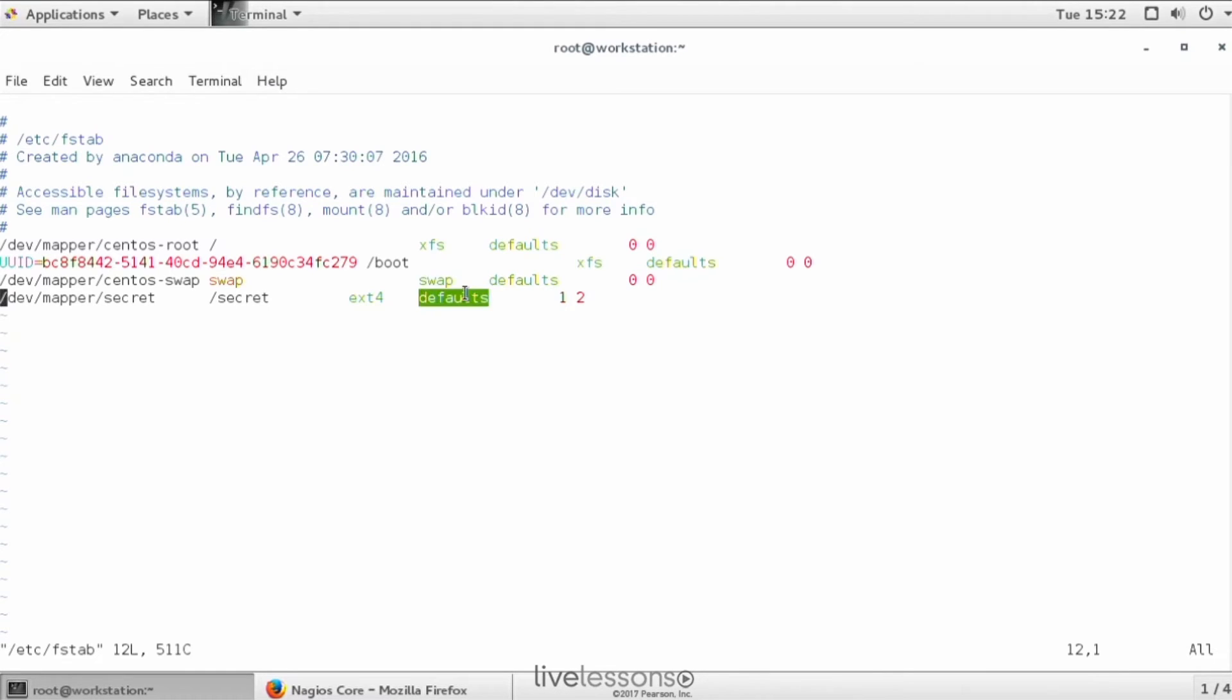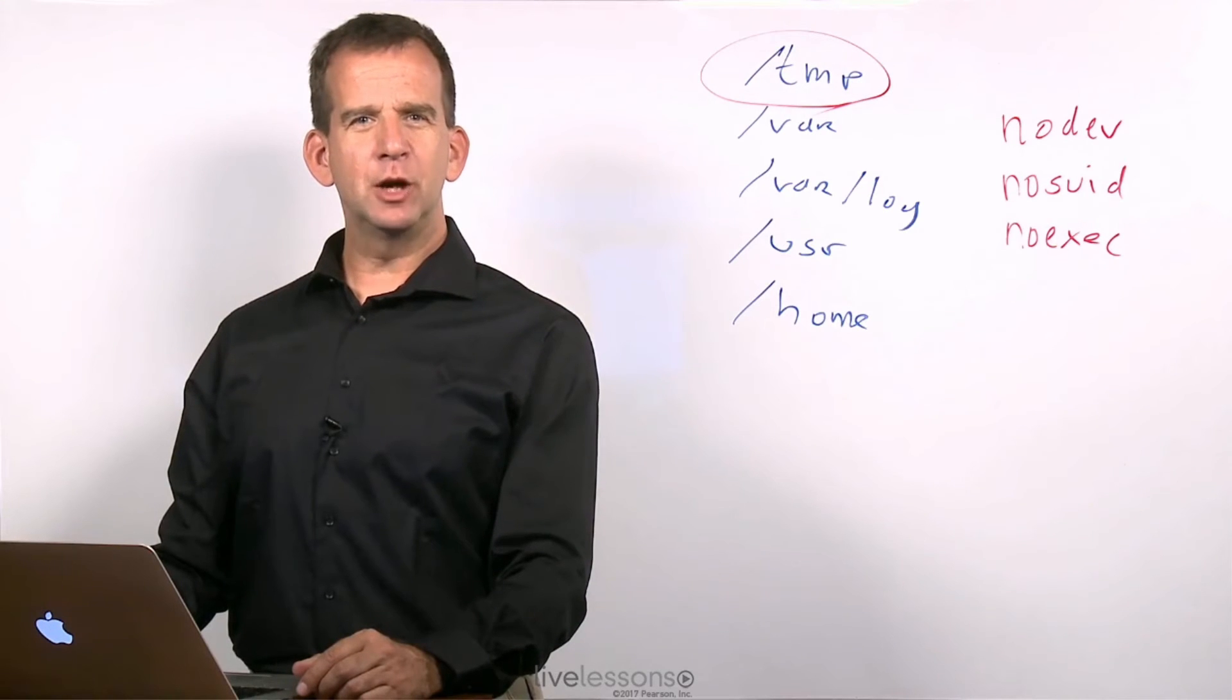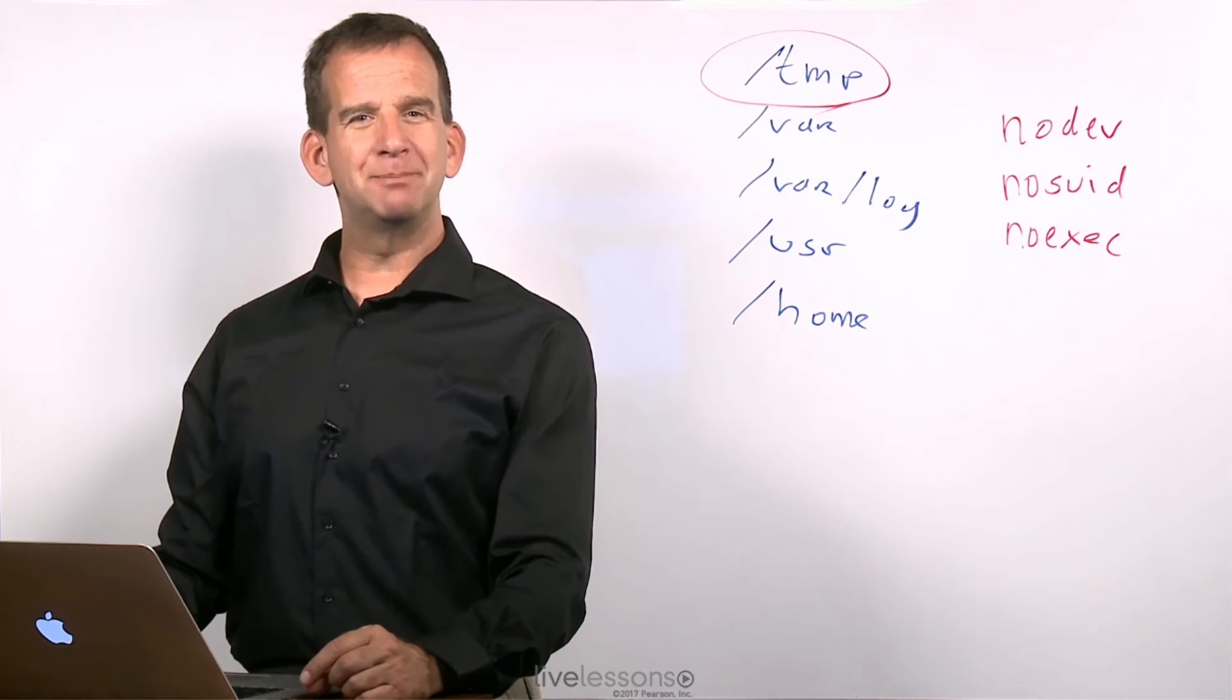In the /etc/fstab, we have the column that often shows defaults for default options, and you can change that to match any of the options that you want to use. And that's all you need to know about security-related mount options.